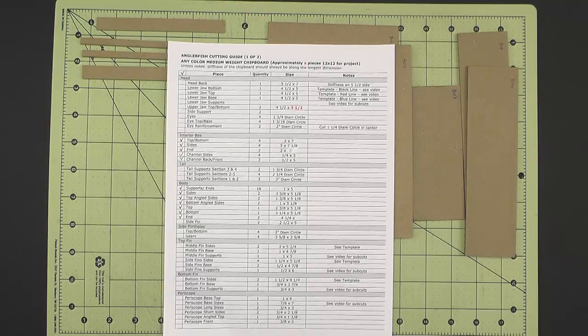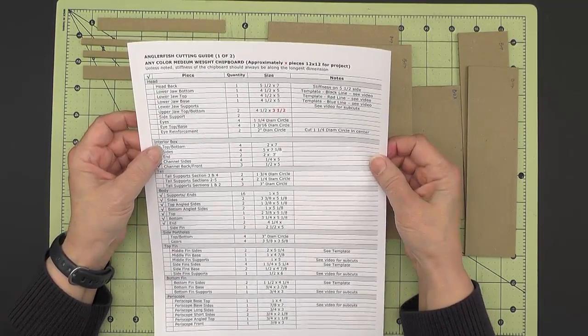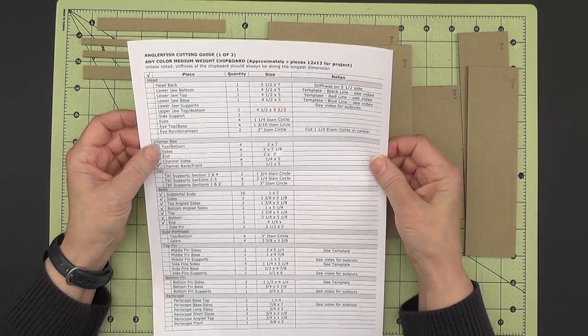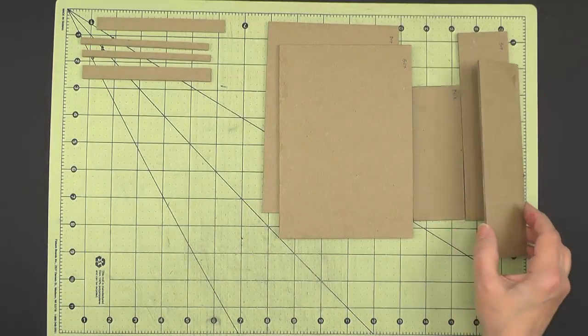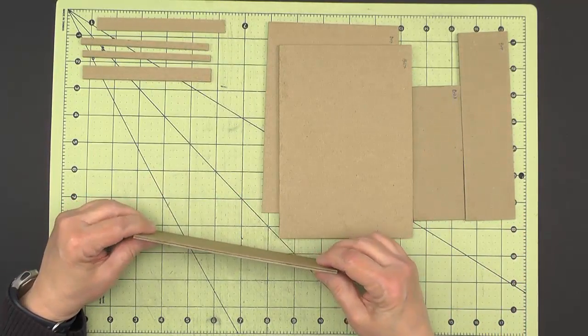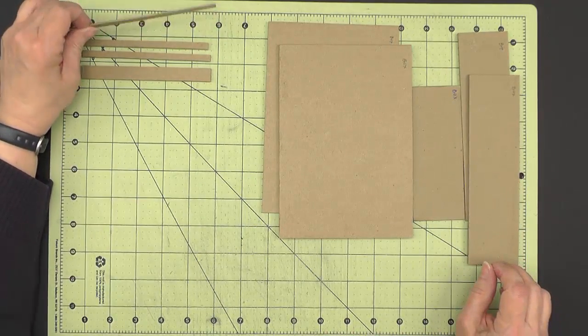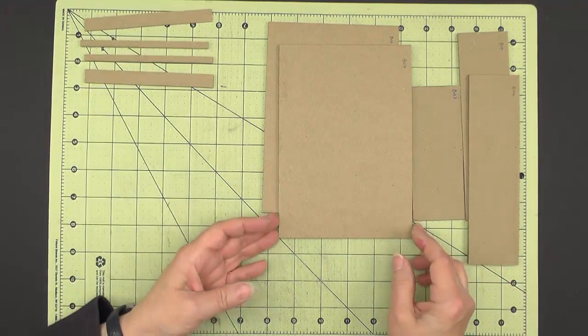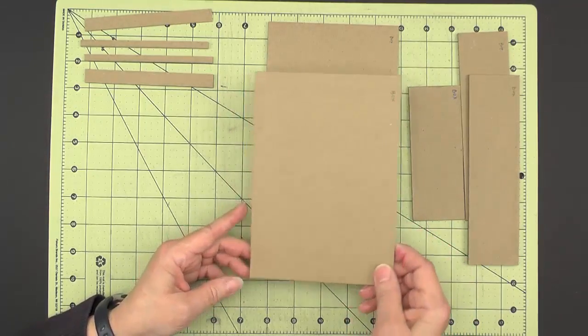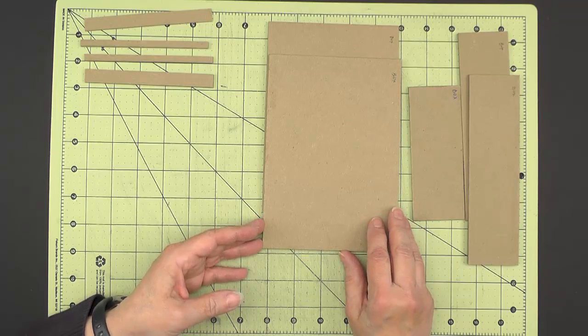We'll start our construction by making the interior box. I have here one of the pages from the materials and cutting guide, and I've cut all of these pieces that are listed under the interior box section. And then I've also gone ahead and glued them up. Every piece is doubled except for there is one single piece that is 1/2 inch by 5.